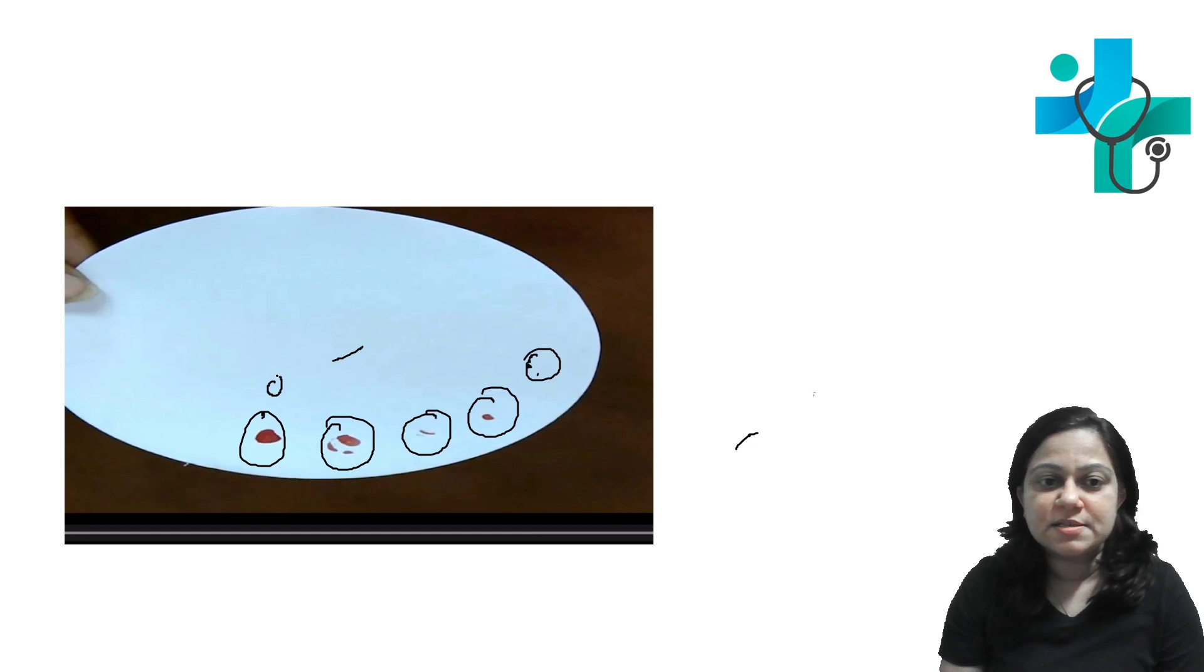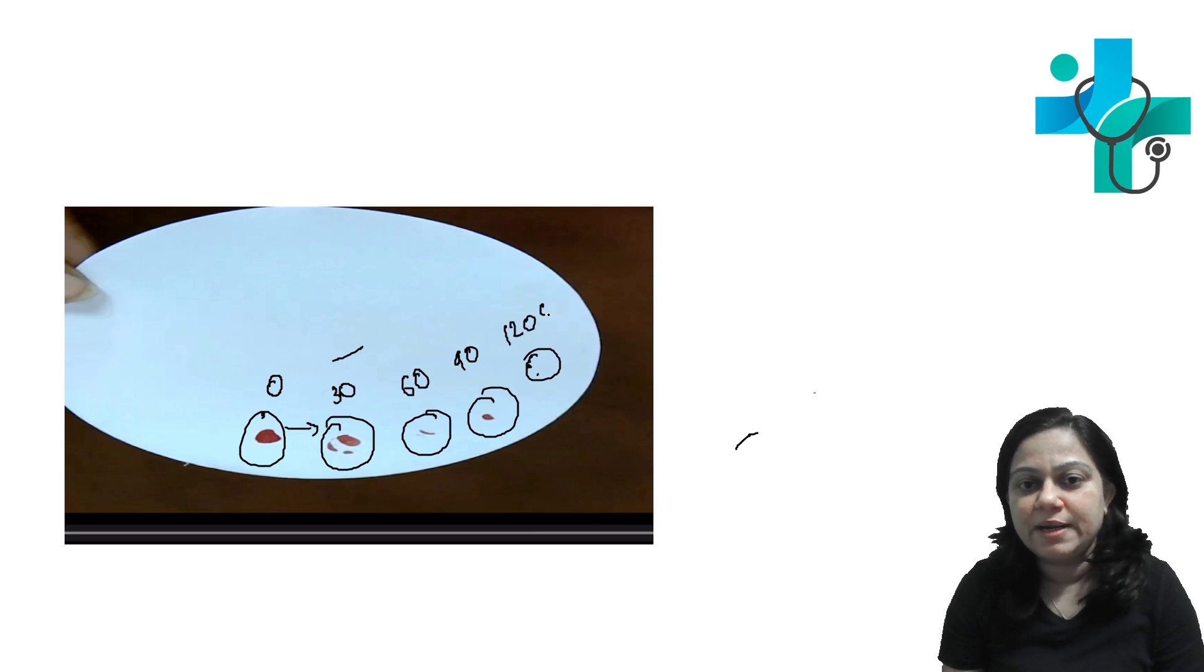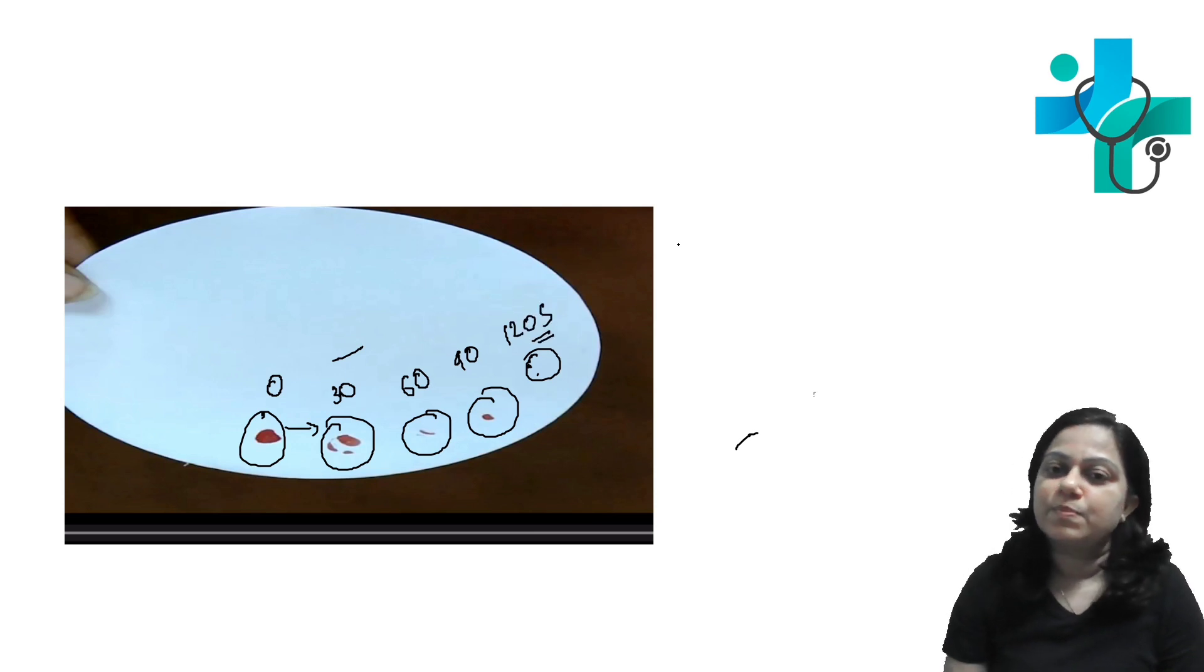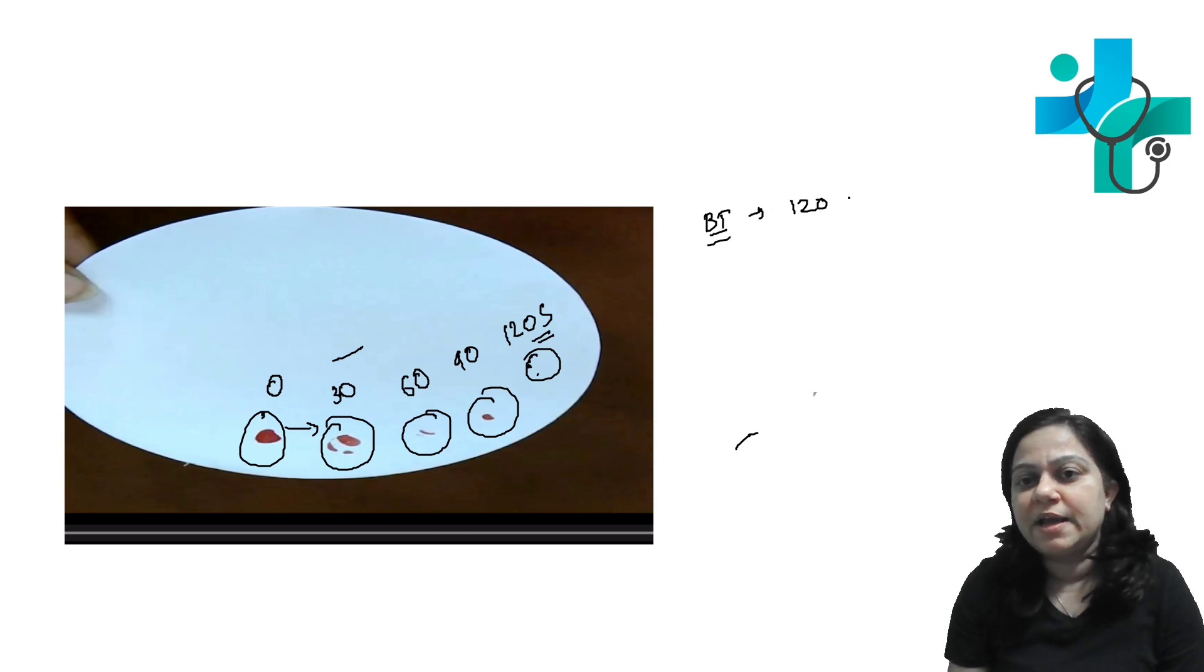This is zero time. Then at every 30 seconds - after 30 seconds, again after 30 seconds means this is 60 seconds, then 90 and 120 seconds. So bleeding time here is 120 seconds.